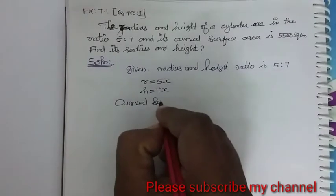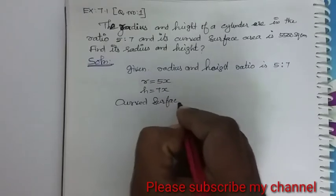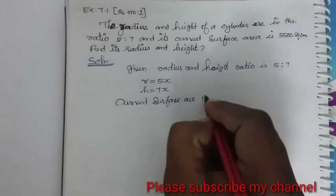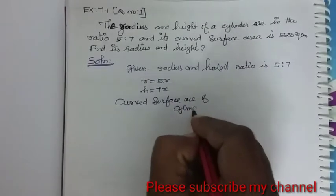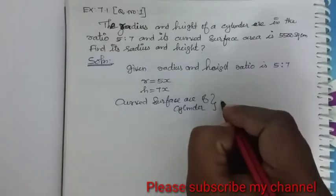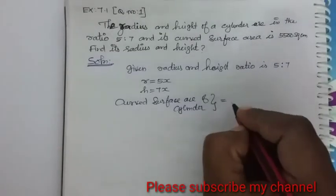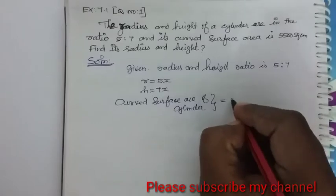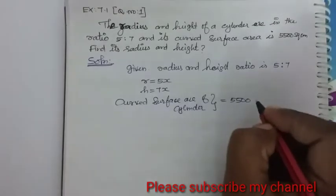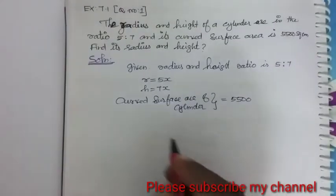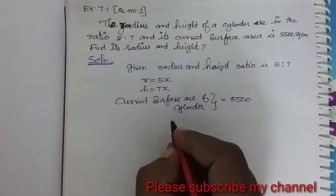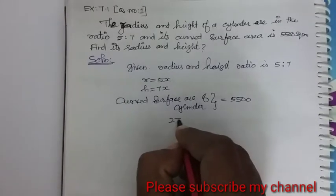So h is equal to 7x. Next, what is given is the curved surface area of the cylinder, which is equal to 5,500 square centimeters.